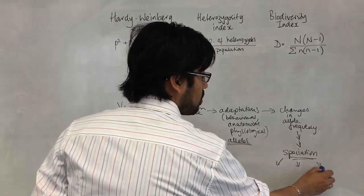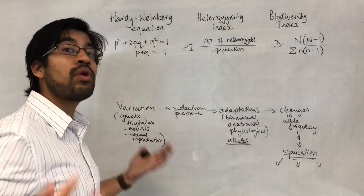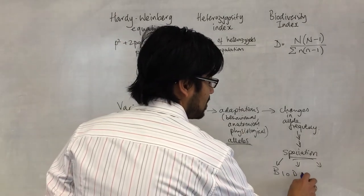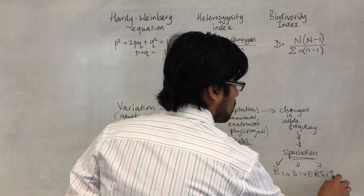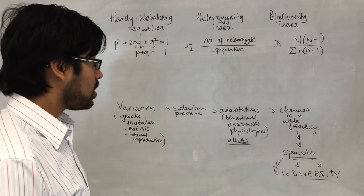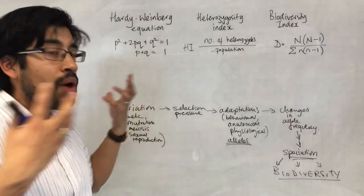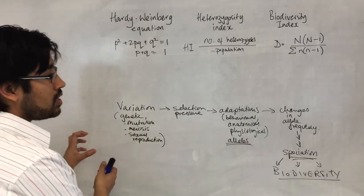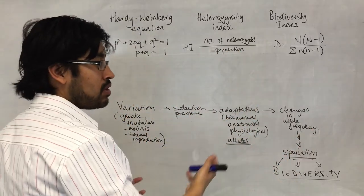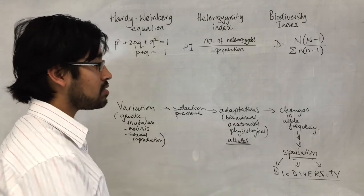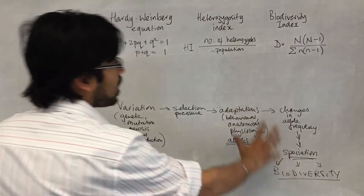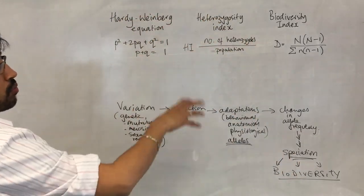Speciation leads to the generation of different types of species, and that means we are looking at essentially the definition of biodiversity. All the different species in a particular environment. Variation gives us adaptations. Adaptation gives us evolution of organisms. Evolution of organisms over a long time, in different habitats, in different conditions, gives us speciation. And speciation gives us all the different species of organisms.